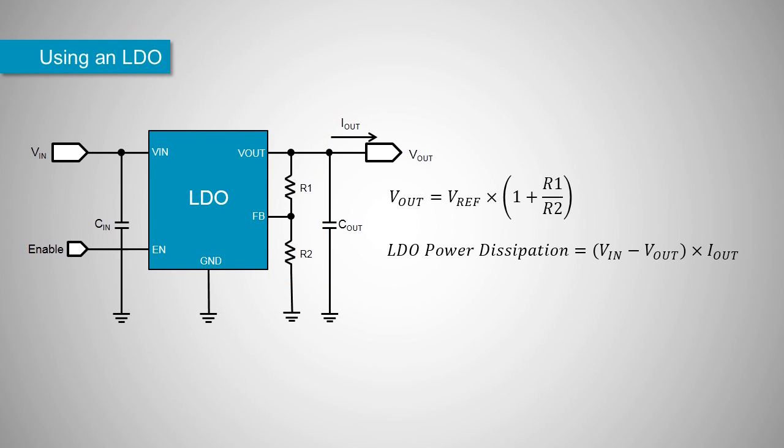The power dissipation of the LDO is determined by the voltage drop across the LDO multiplied by the current passing through the LDO.